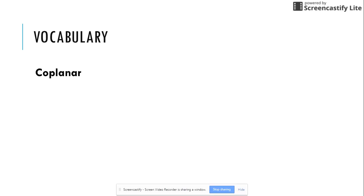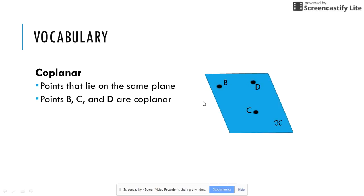Which leads us to the term coplanar. Co meaning together, planar meaning on the same plane. Points that lie on the same plane are coplanar. So points B, C, and D are coplanar.